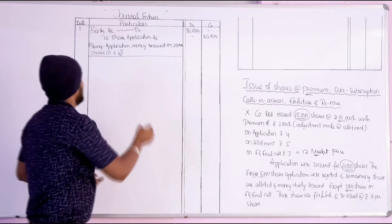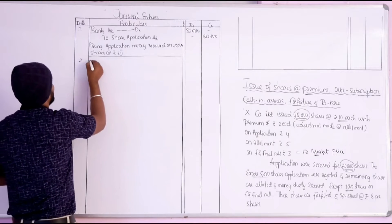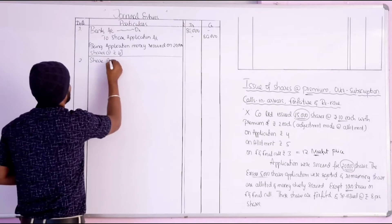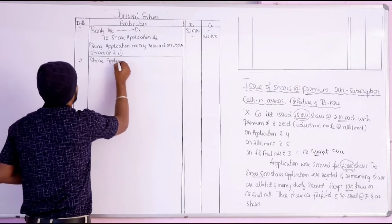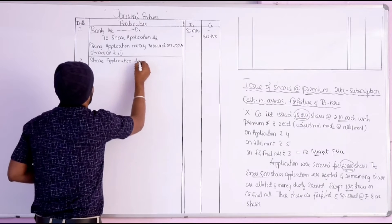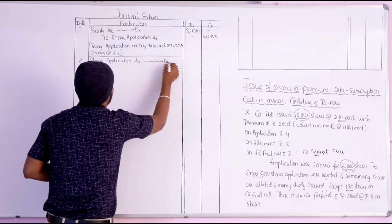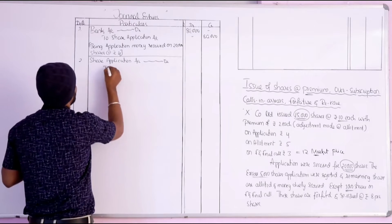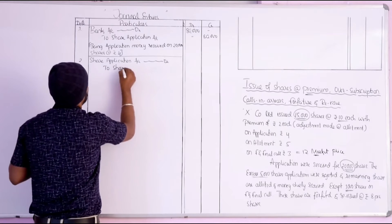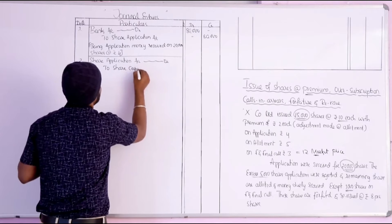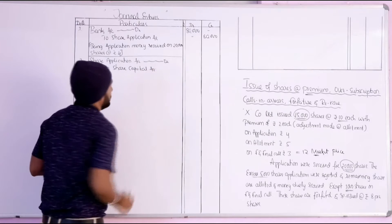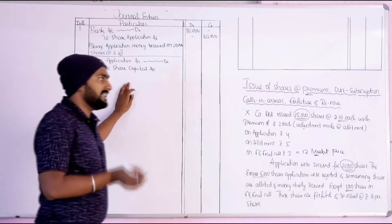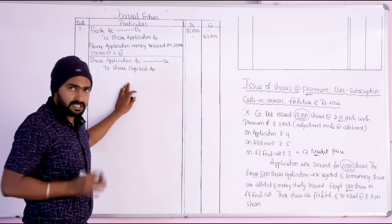The second entry is the transfer entry: Share application account debit, to share capital account credit. This is the transfer entry for share application money transferred to share capital account.